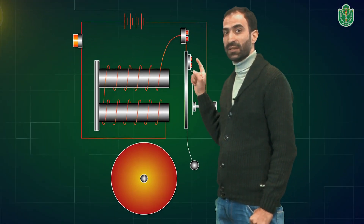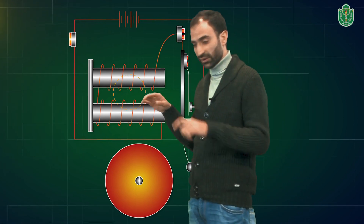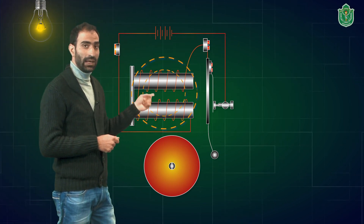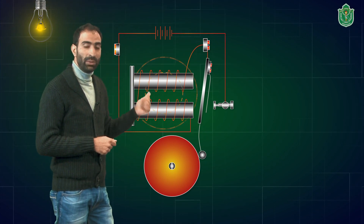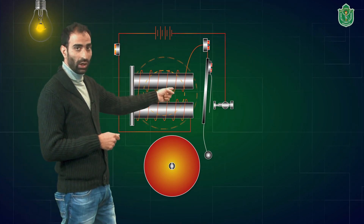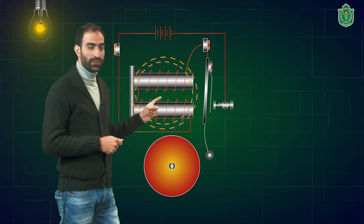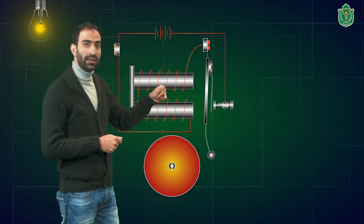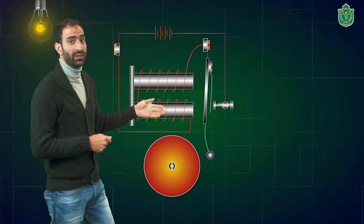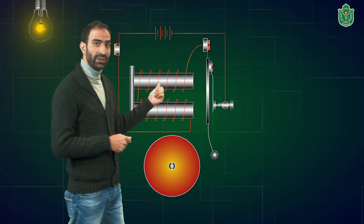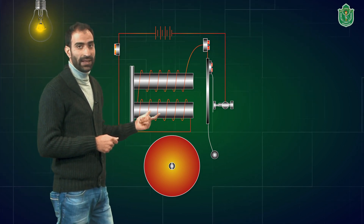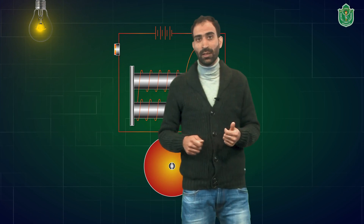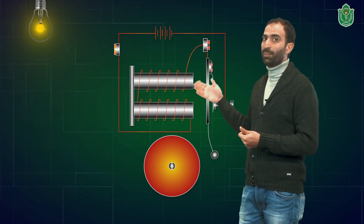When the switch is pressed, the current starts to flow through the circuit, the circuit gets complete, and the coil starts to behave as an electromagnet attracting the hammer and making it strike against the metallic gong. But as the hammer moves towards the gong, the circuit gets broken and the current stops flowing. The coil loses its magnetism and the hammer returns to its normal position. As the hammer returns, the circuit gets completed once again, the coil regains its magnetism making it strike the metallic gong again. This way, the hammer strikes the gong again and again, making the bell work.